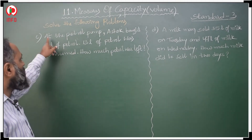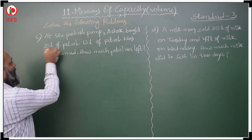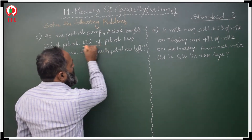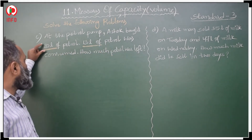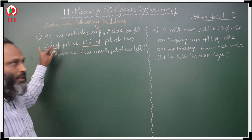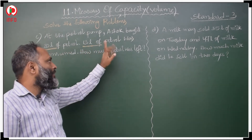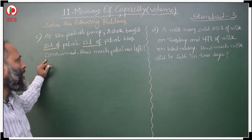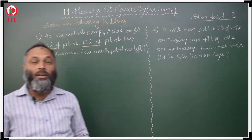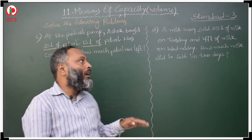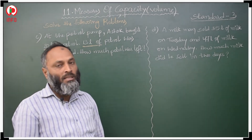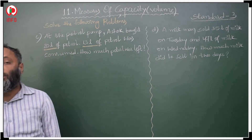Next question: At the petrol pump, Ashok bought 20 liters of petrol and 13 liters of petrol was consumed. How much petrol was left? Whenever 'left' is given, we subtract. Total petrol bought minus petrol consumed equals petrol left. Petrol bought = 20 liters, petrol consumed = 13 liters.